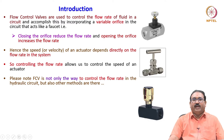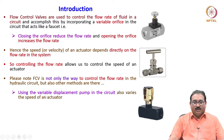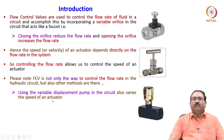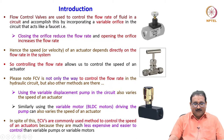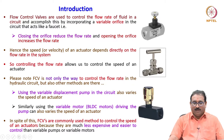Please note, an FCV is not the only way to control the flow rate in a hydraulic or pneumatic circuit — other methods exist. Some of them include using a variable displacement pump in the circuit, which varies the speed of an actuator by varying the flow rate. Similarly, using a variable motor, like a BLDC motor driving the pump, can also vary the speed of an actuator. In spite of this, FCVs are the commonly used method because they are much less expensive and easier to control than variable pumps or variable motors.